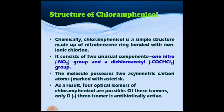First of all, we see the structure of chloramphenicol. Chloramphenicol has a simple structure made up of a nitrobenzene ring bonded with a non-ionic chloro group. It consists of two unusual components: one is a nitro group, and secondly a dichloroacetyl group. The molecule possesses two asymmetric carbon atoms. As a result, it gives four optical isomers, out of which the dextro-threo isomer is antibiotically active.